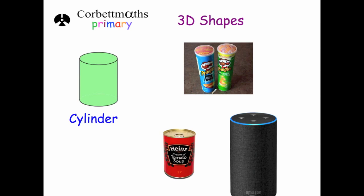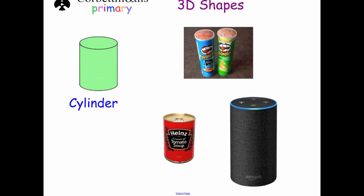Cylinders, some examples being Pringle cans or cans of soup, or even an Alexa would be a cylinder.